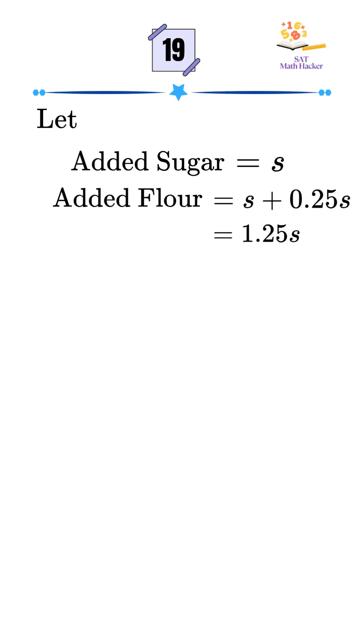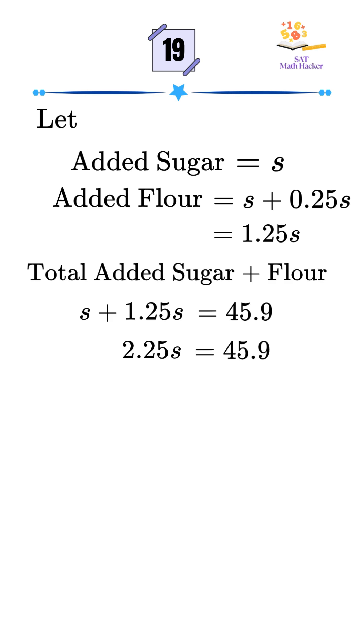The total added weight becomes S plus 1.25S equals 45.9. Combining like terms, 2.25S equals 45.9. Dividing both sides by 2.25, we get S equals 20.4.